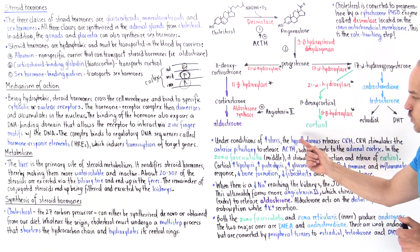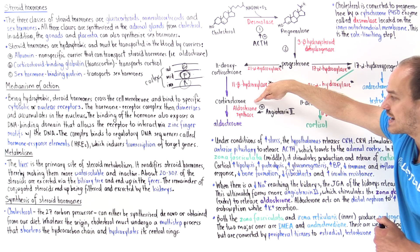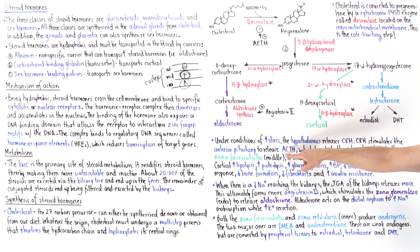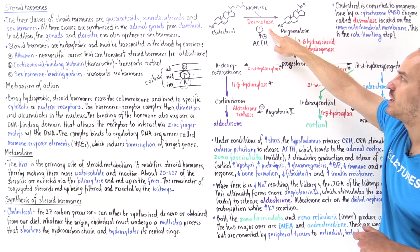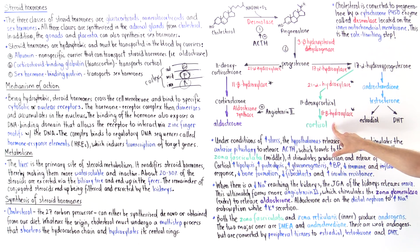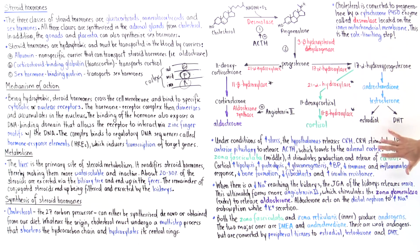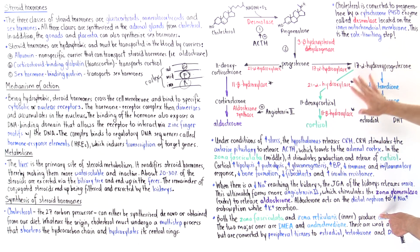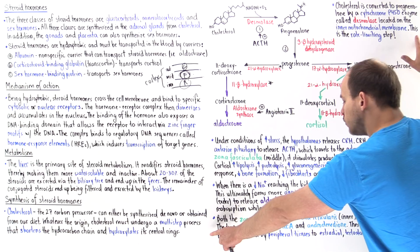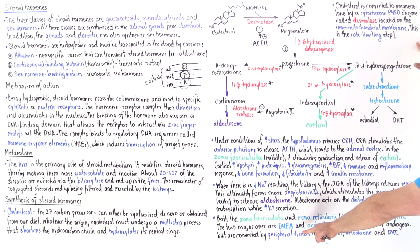ACTH released by the anterior pituitary gland increases the activity of desmolase, ultimately helping form more cortisol — analogous to how angiotensin 2 increases aldosterone synthase activity. In the zona reticularis, both zona fasciculata and zona reticularis can produce androgens, but they are predominantly produced in the zona reticularis. The two major androgens are DHEA and androstenedione.